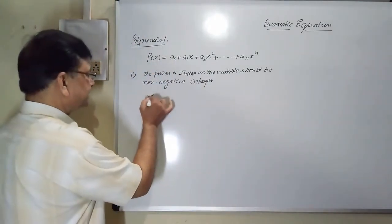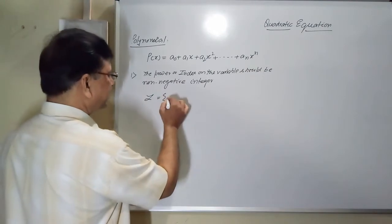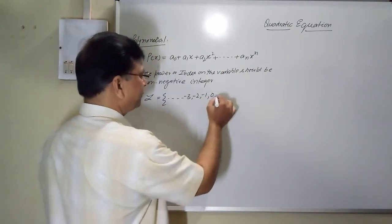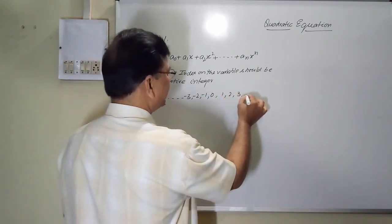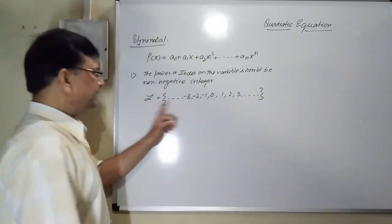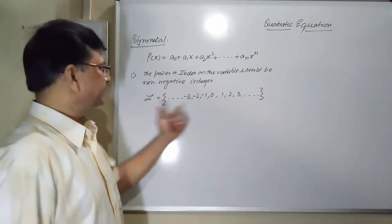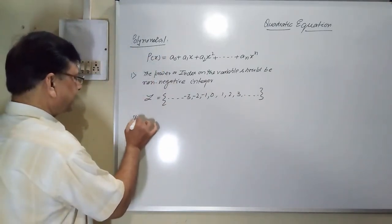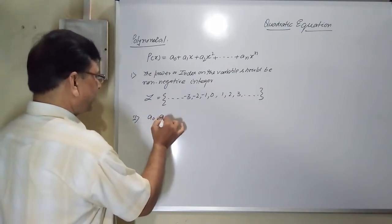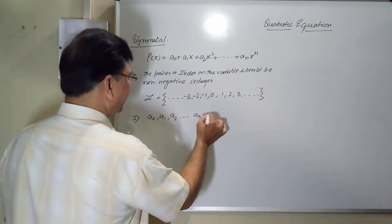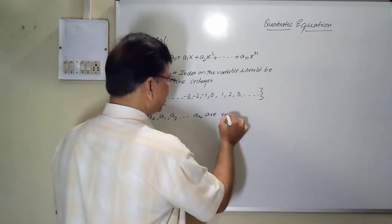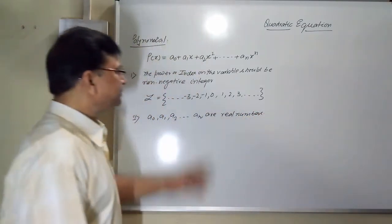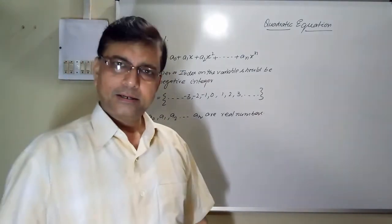Integers are the set of numbers like −3, −2, −1, 0, 1, 2, 3, up to infinity — denoted by Z. That is the first condition. The second condition is that a₀, a₁, a₂ up to aₙ are real numbers. So any expression of this form is called a polynomial.